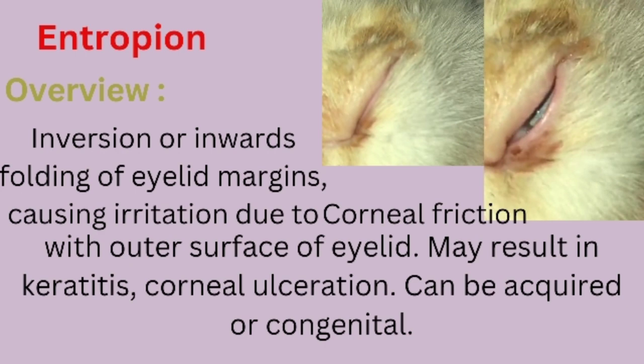First of all, its overview. Entropion is defined as inversion or inward folding of the eyelid margin — a condition in which the eyelid margin becomes folded inward and the eye appears completely closed. This causes irritation due to corneal friction with the outer surface of the eyelid, leading to keratitis, corneal ulceration. It can be acquired or congenital. Acquired entropion can result from traumatic injury or any foreign body.